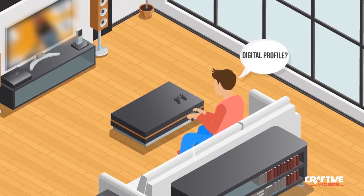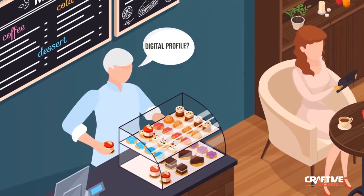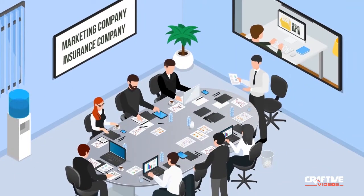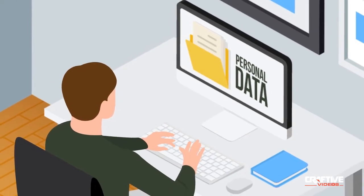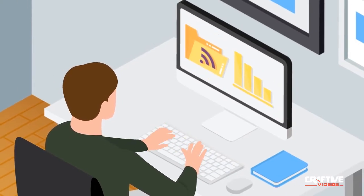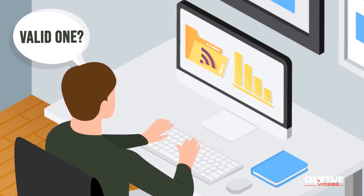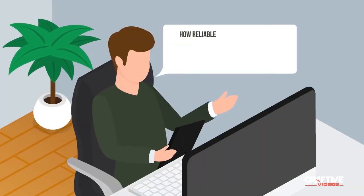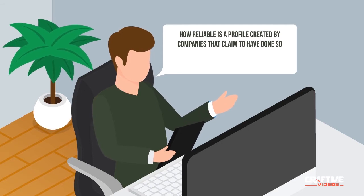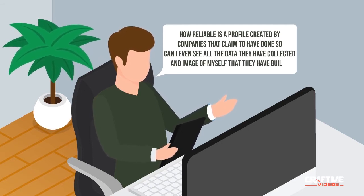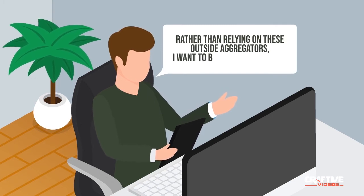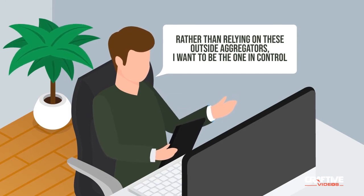What does my digital profile look like? What information do people and companies have about me? I'm profiled through the use of my personal data, my online behavioral data, and demographic data. But is this profile a valid one? Since I was never asked directly to provide this information, how reliable is a profile created by companies that claim to have done so? Can I even see this image of myself that they have built? Rather than relying on these outside aggregators, I want to be the one in control of how I am seen and how my digital profile and data is used.